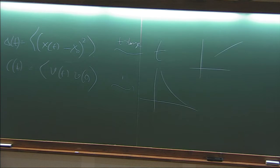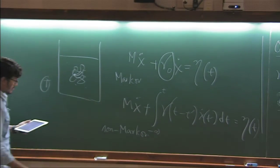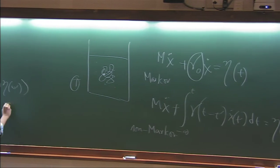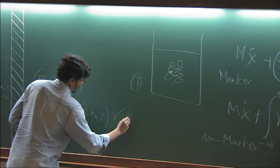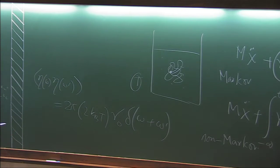And so we want to write the fluctuation dissipation in Fourier domain, why? Because you can see this is the convolution form, and in Fourier domain this equation is tractable. So let me just write down. So it looks like this in classical.